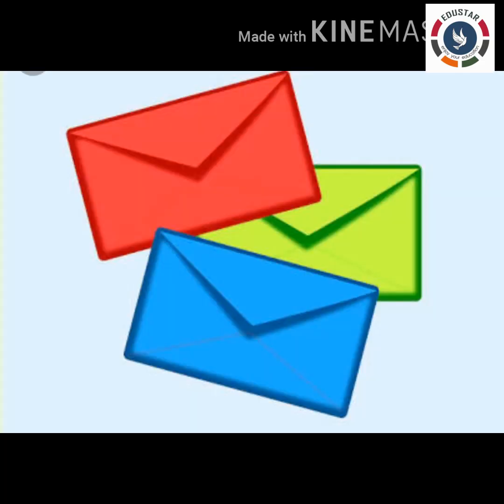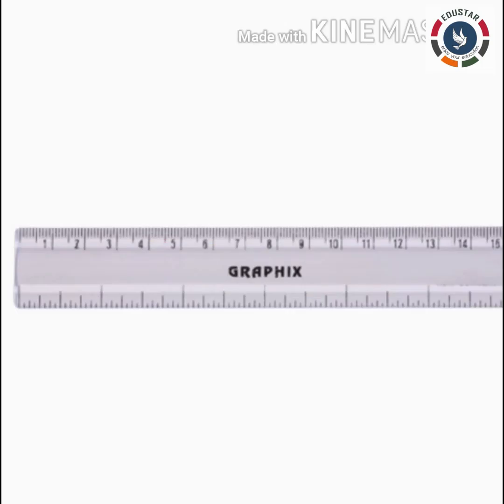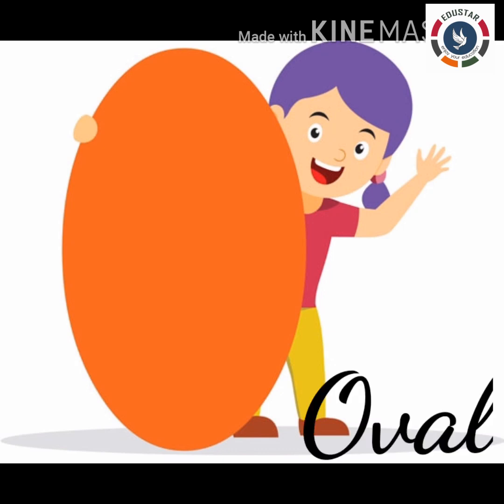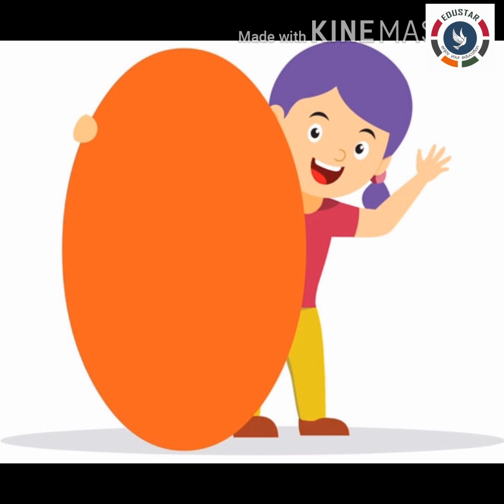What shape is this? Yes, this is an oval. It is made up of one closed curved line. It has no corners. Let's see examples of oval.